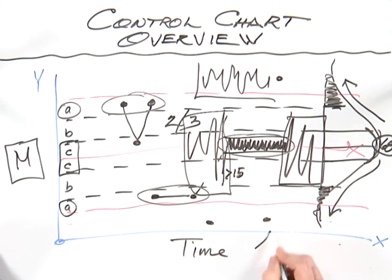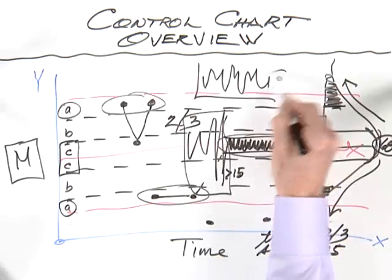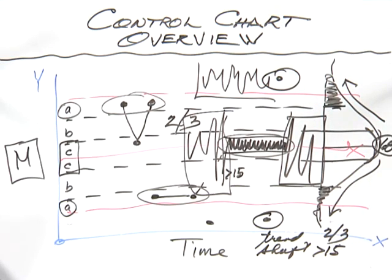We have a trend. We have a shift. We have two out of three. We have 15 or more hugging the center line. The classic rule that we started with is when you have a single data point that exceeds the upper or lower control limit, and that is classically known as a three sigma violation of special cause.